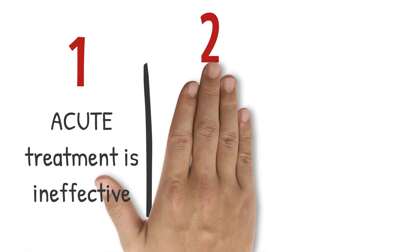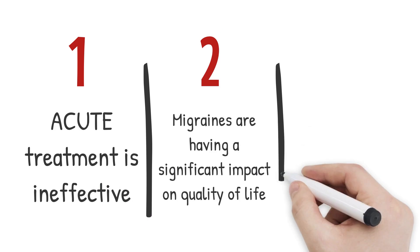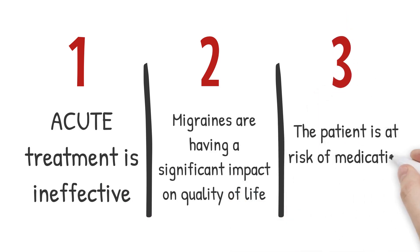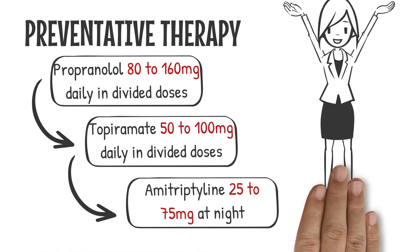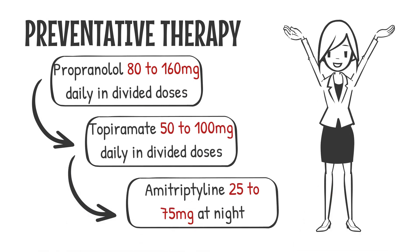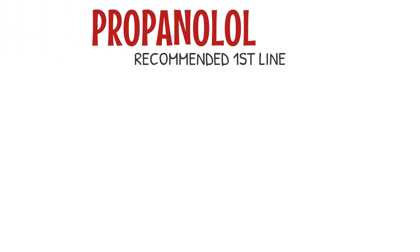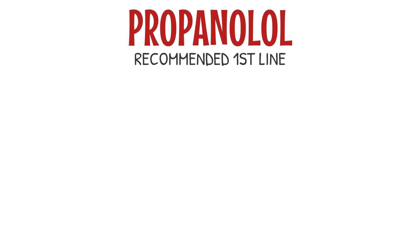Preventative treatment is considered if acute treatment is ineffective, migraines are having a significant impact on quality of life, or the patient is at risk of medication overuse headaches. Choice of therapy includes propranolol 80–160mg daily in divided doses, topiramate 50–100mg daily in divided doses, and amitriptyline 25–75mg at night. Usually, propranolol is recommended first line.